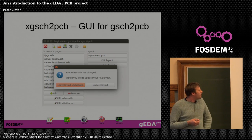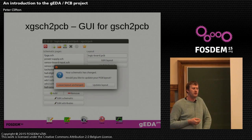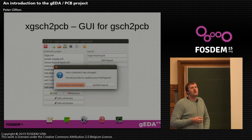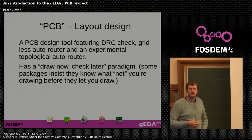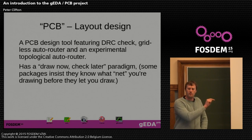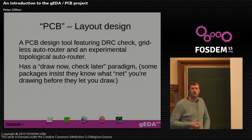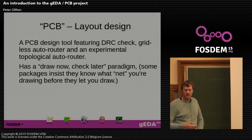PCB features a DRC check and a gridless autorouter. It has an experimental topological autorouter which I wouldn't recommend for anything other than small one or two layer boards. One thing that perhaps keeps it distinct from commercial packages is that you can basically draw things — similar to G-Schem, it is a drawing package. You draw lines on layers and connectivity is checked after the fact. Some commercial tools insist you can't draw a line unless clicking on a pin, which can be quite constraining.